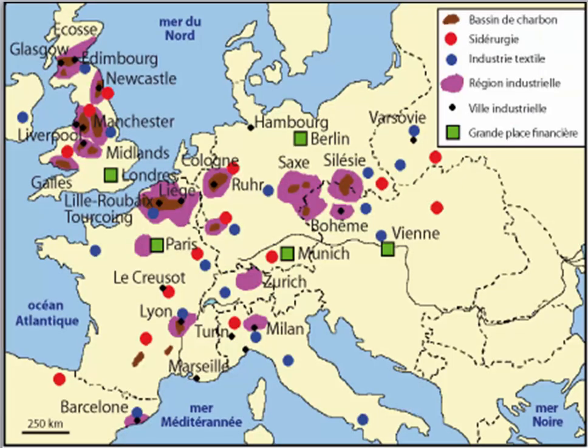We start to see new centers of industry begin to develop. England still maintains its position as a major producer, but we also start to see Germany. Everything marked in purple on the map represents regions that are industrial — all of those areas in Germany begin to be parts of major industrial centers. Northern France and Belgium also begin to become centers of industry. We also start to see the application of electrical energy to production.